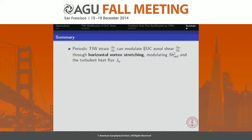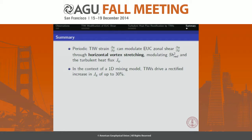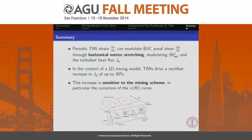To summarize: periodic tropical instability wave strain — meridional diffluence — can modulate equatorial undercurrent zonal shear through horizontal vortex stretching, which modulates the reduced shear squared and thus the turbulent heat flux. In the context of this simple 1D mixing model, tropical instability waves can drive an increase in that heat flux of up to 30%, but that increase is very sensitive to the mixing scheme — specifically the curvature of the κ(Ri) curve. This has potentially large implications for the equatorial SST budget and for different ocean models' representation of the role of tropical instability waves in modulating vertical mixing.